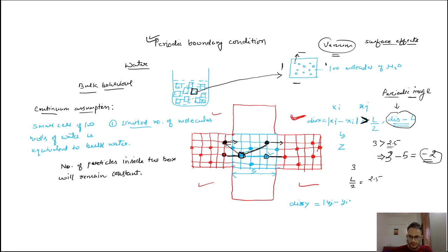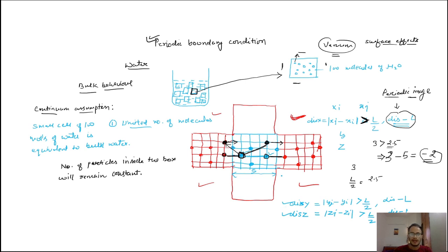The same condition applies in the y and z directions. For y: if |yj - yi| is greater than Ly/2, the periodic image distance is distance minus Ly. For z: if |zj - zi| is greater than Lz/2, the periodic image distance is distance minus Lz. That covers periodic boundary conditions in all three directions. Thank you.